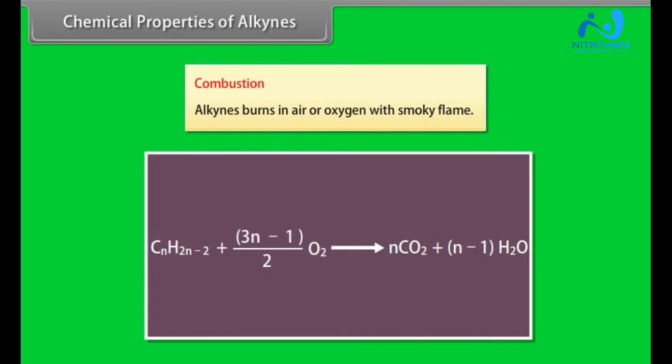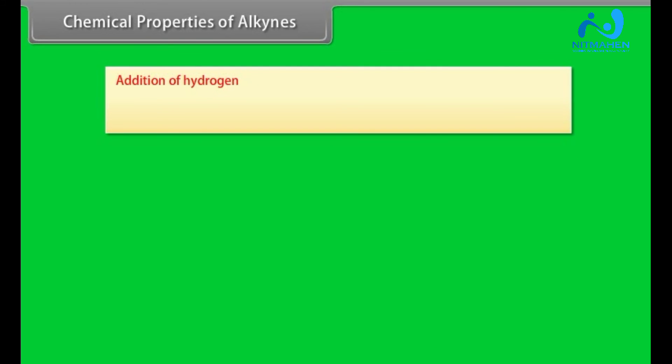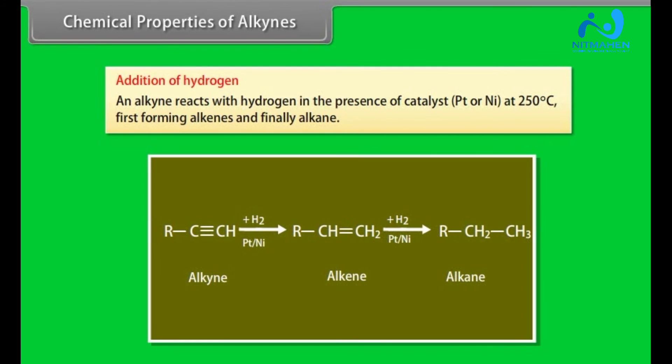Chemical properties of alkynes. Combustion: Alkynes burn in air or oxygen with smoky flame. Addition of hydrogen: An alkyne reacts with hydrogen in the presence of catalyst, Pt or Ni, at 250 degrees centigrade, first forming alkenes and finally alkanes.